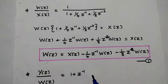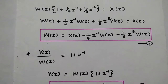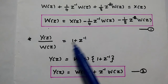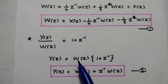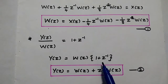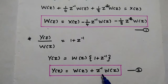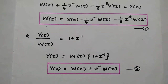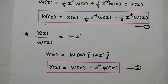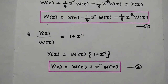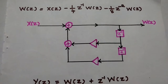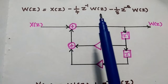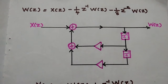Then taking the next expression: Y(Z)/W(Z) = 1 + Z⁻¹. Cross-multiplying: Y(Z) = W(Z)·(1 + Z⁻¹). Expanding: Y(Z) = W(Z) + Z⁻¹·W(Z). Consider this as the second equation. Next, we are going to draw the diagram or structure for these two equations and then combine them to get the Direct Form 2 structure.